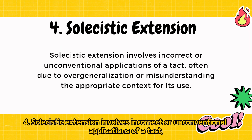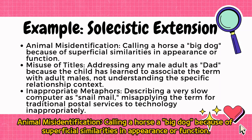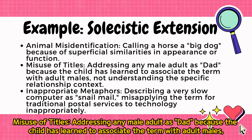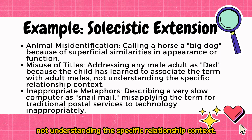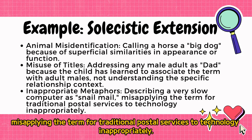4. Solacistic extension involves incorrect or unconventional applications of a tact, often due to overgeneralization or misunderstanding the appropriate context for its use. Examples: Animal misidentification — calling a horse a 'big dog' because of superficial similarities in appearance or function. Misuse of titles — addressing any male adult as 'dad' because the child has learned to associate the term with adult males, not understanding the specific relationship context. Inappropriate metaphors — describing a very slow computer as 'snail mail,' misapplying the term for traditional postal services to technology inappropriately.